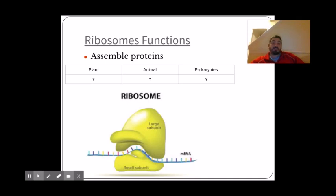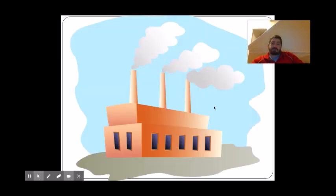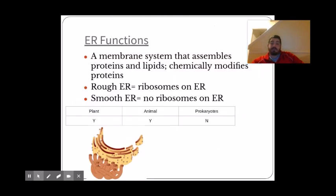So these ribosomes are what make proteins. And you can see they're found in all three types of cells, plant, animal, eukaryotes, and prokaryotes. So they all have ribosomes to help make these proteins. And when we're comparing it to a town, the ribosomes are like factories, because factories make all the goods and products that we use every day. And ribosomes make all those proteins, which we use every second of every day in our cells.